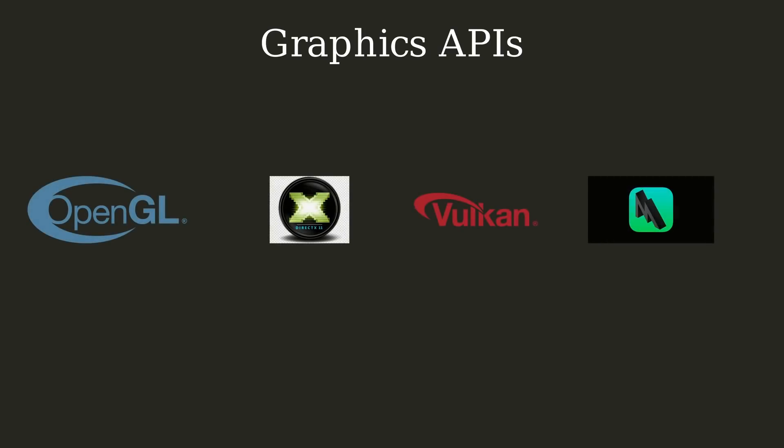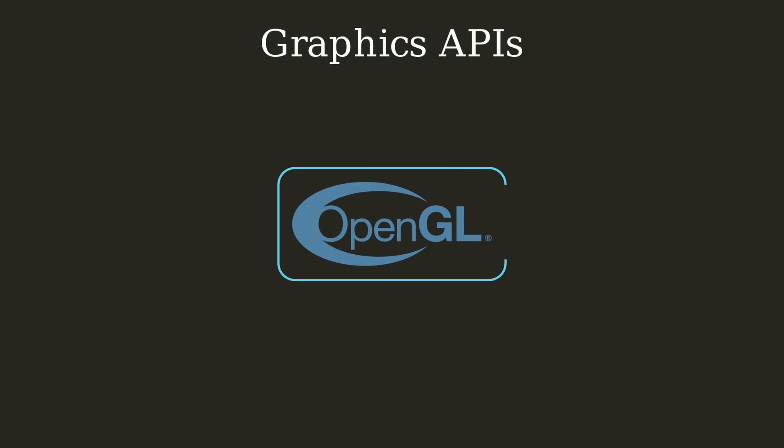In order to code a game like Minecraft, you need to decide on a graphics API so we can access the GPU. There are a few publicly available graphics APIs: DirectX, OpenGL, Vulkan, Metal, and a few more. Throughout this series, I will be using OpenGL and referencing OpenGL function calls, but most concepts should remain similar across these APIs. If you've never done graphics programming before, I would highly recommend sticking with OpenGL, as it's one of the simpler APIs available.